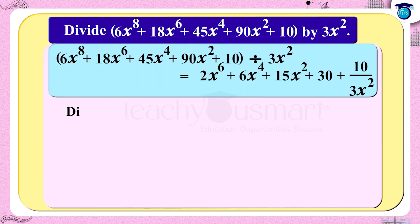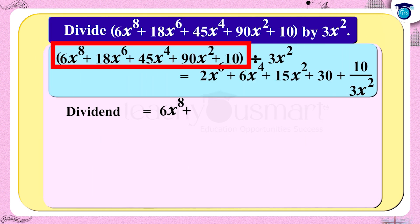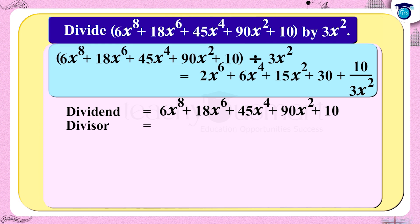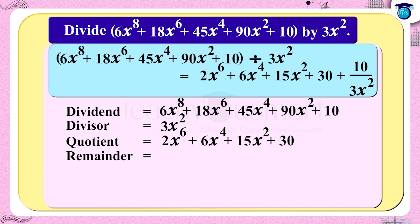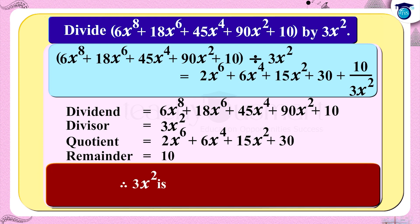Hence, the dividend is 6x⁸ + 18x⁶ + 45x⁴ + 90x² + 10, the divisor is 3x², the quotient is 2x⁶ + 6x⁴ + 15x² + 30, and the remainder is 10. Since the remainder is not 0, 3x² is not a factor of p(x).